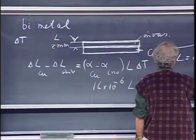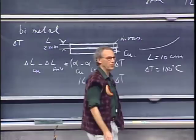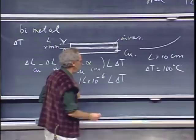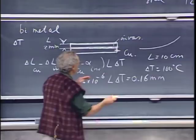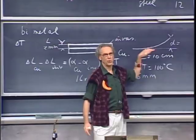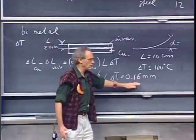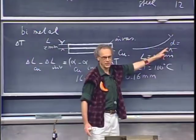If I take a length of 10 centimeters and increase the temperature by 100 degrees centigrade, the difference in length is 0.16 millimeters — very little. And yet this strip will curve substantially. For those mathematically oriented, you can assume it forms a perfect circle with an outer arc longer by 0.16 millimeters than the inner one, and I found that it curves by about 4 millimeters for these dimensions — that's substantial.